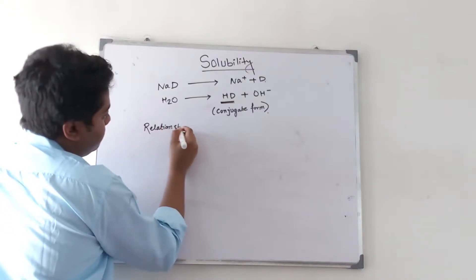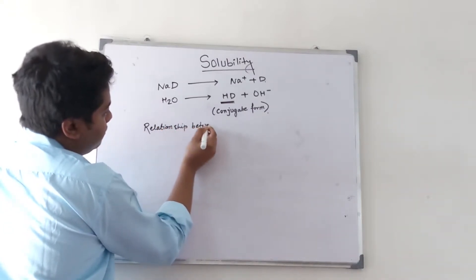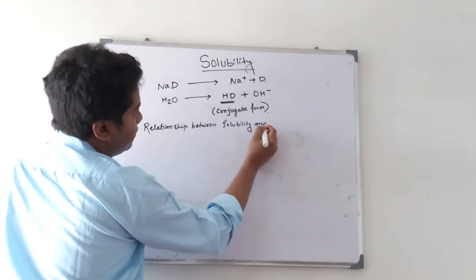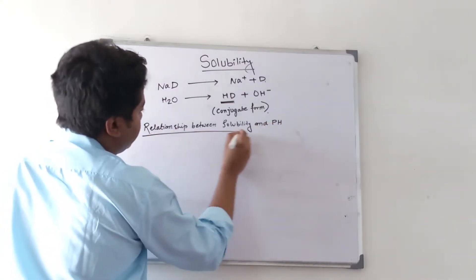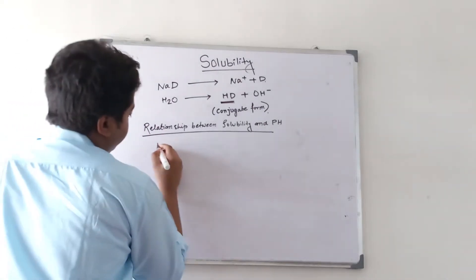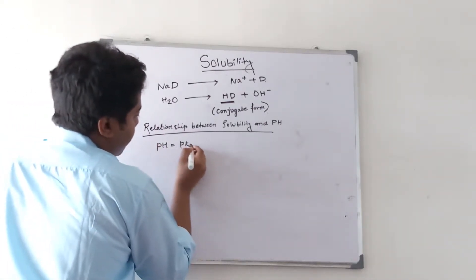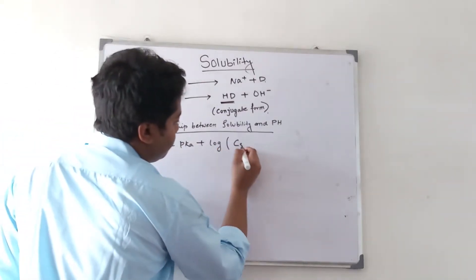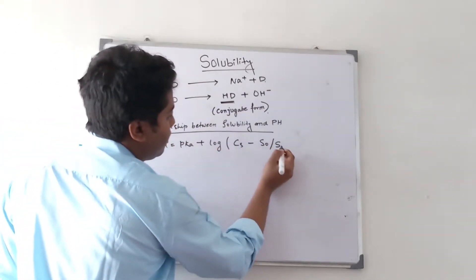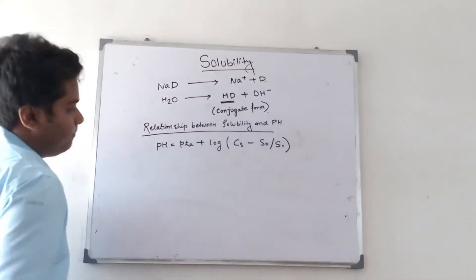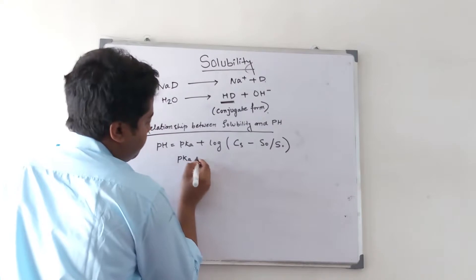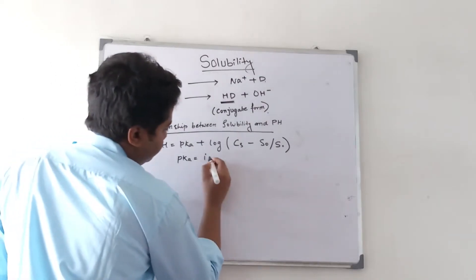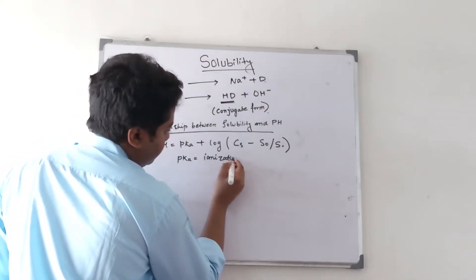The relationship between solubility and pH is generally expressed by pH equals pKa plus log of (Cs minus S0) by S0, where pKa is the ionization constant.